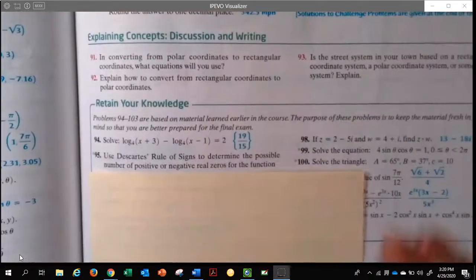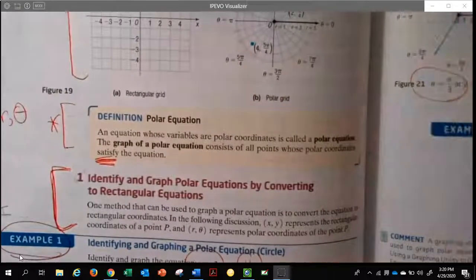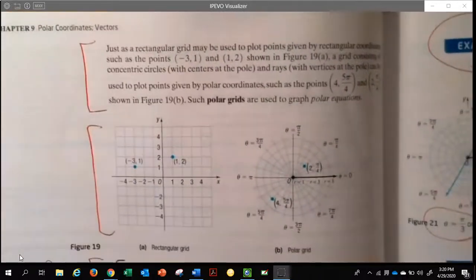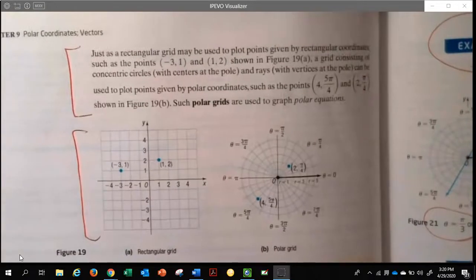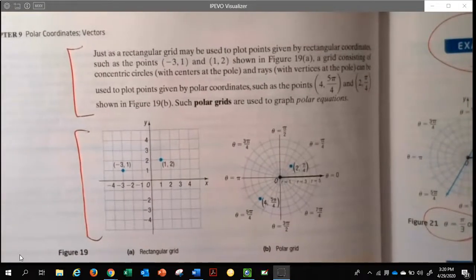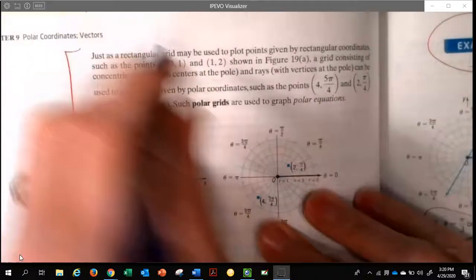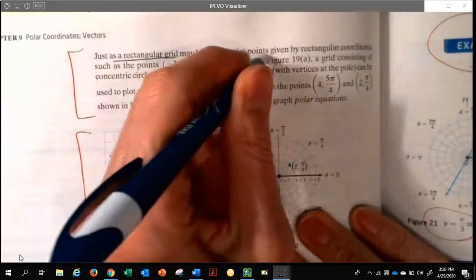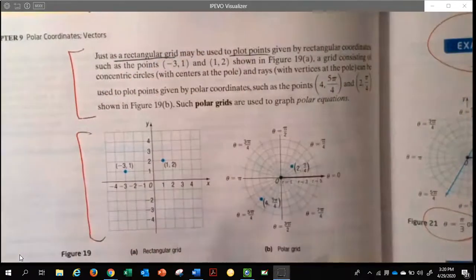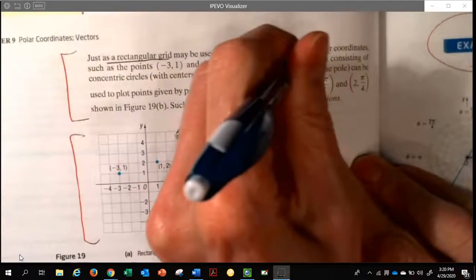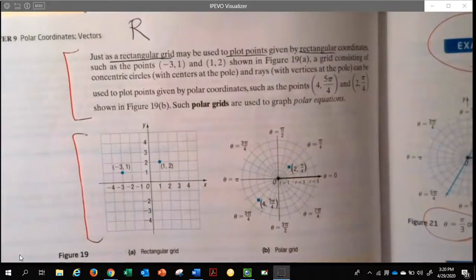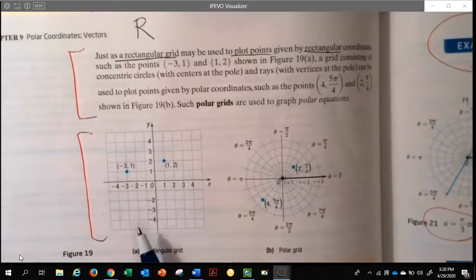A quick intro to this section is at the top of page 586. At the top, you see some paragraphs, and I'd like to read through those. Just as a rectangular grid—make sure you heard that word—a rectangular grid may be used to plot points given by rectangular coordinates. So rectangular, x's and y's, everything we've been doing right here. X's and y's, our life so far.